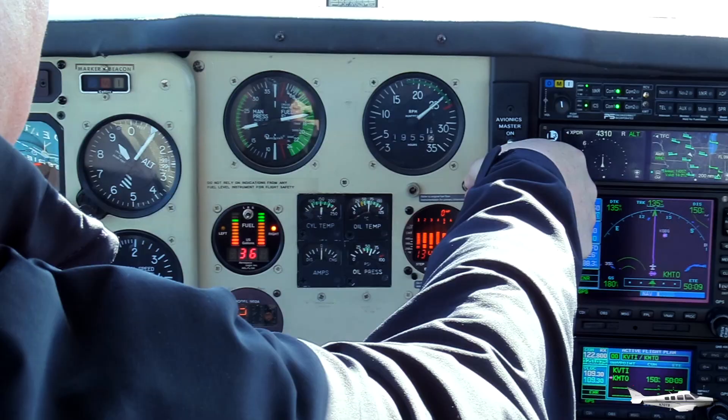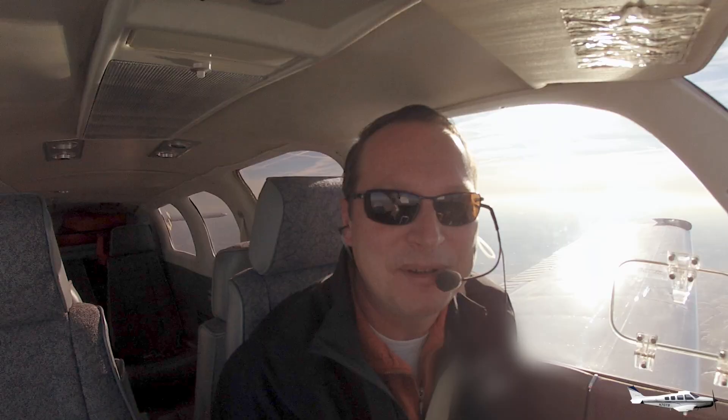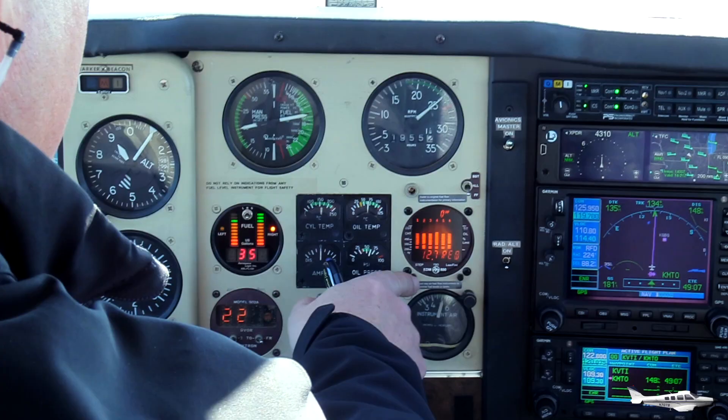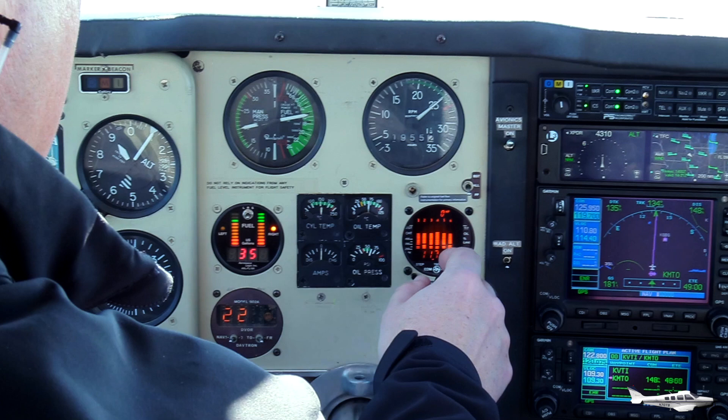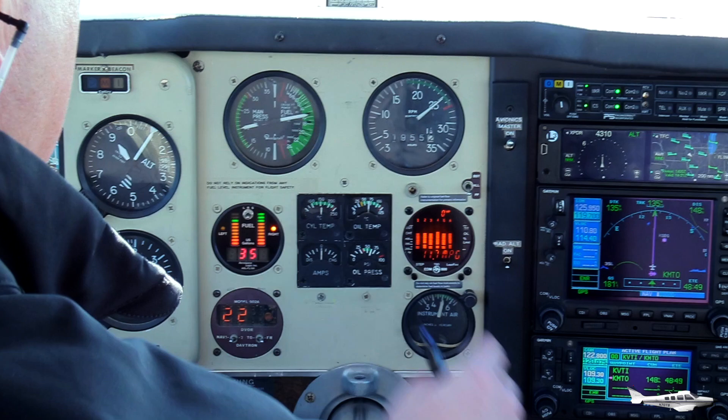I can also turn my engine monitor, with this switch here, from EGT and CHT readouts to fuel related readouts, showing us the fuel flow. And as you can see here, we're pushing about 15.5, 15.6 gallons per hour through the engine at this time. And I can cycle through a few more related values, such as this one here, showing me how many miles per gallon we're traveling. 11.7 miles per gallon right now, similar to the gas mileage of your car, except this one here is in nautical miles.